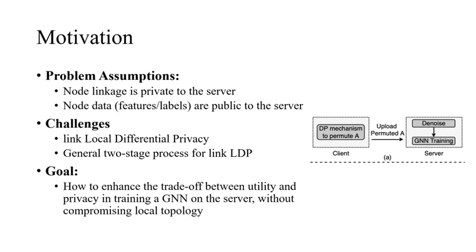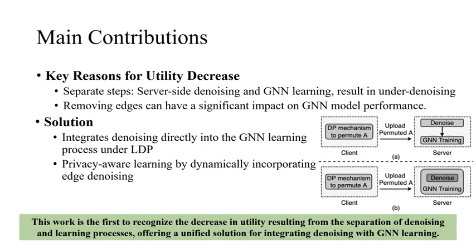Our objective is to achieve a better trade-off in training a GNN on the server without compromising local topology. We argue that a major reason for difficulty in the privacy and utility trade-off of existing work is not the noise injection itself. The denoising operation and the GNN training process on the server side are usually separated into two steps without effective integration, and this separation results in under-denoising, leaving the following learning process affected by noise uncertainty.